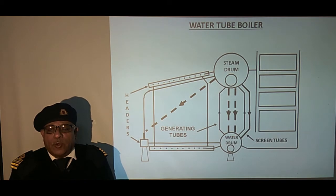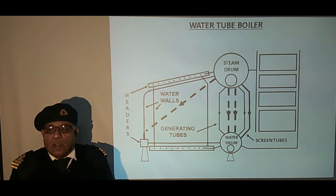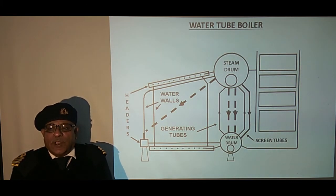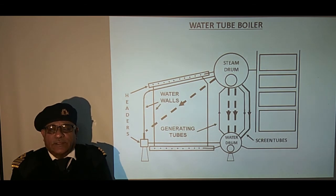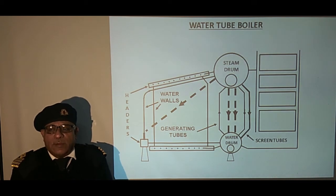The next component is water walls. Water walls are basically used to contain the heat of the furnace. As they surround the furnace and form the walls, the amount of high-temperature refractory required is greatly reduced.